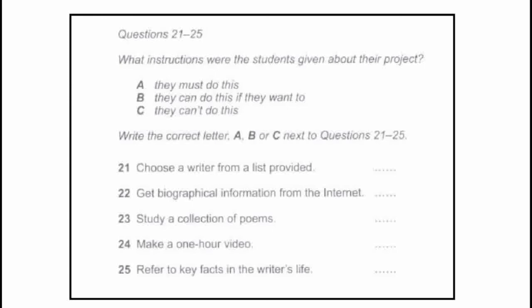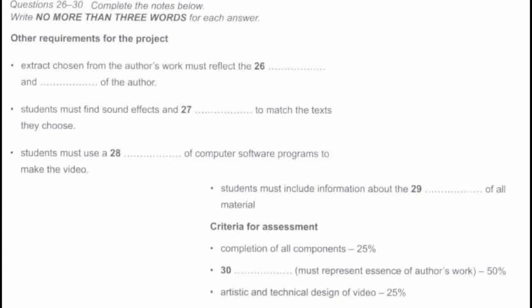Before you hear the rest of the talk, you have some time to look at questions 26 to 30 on page 13. Now, listen and answer questions 26 to 30. Can I check the other requirements with you? Sure. The handout said after we'd read the biography, we had to read the work we'd chosen by our author and choose a passage that's typical in some way, that typifies the author's interests and style. Yes, but at the same time, it has to relate to the biographical extract you choose. There's got to be some sort of theme linking them. Okay, I'm with you.